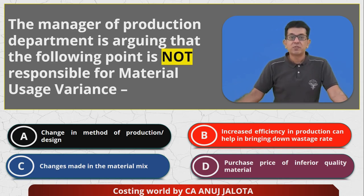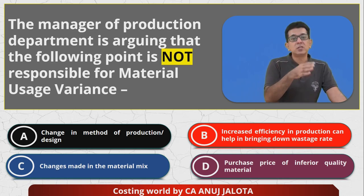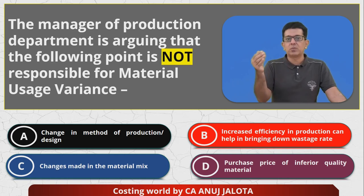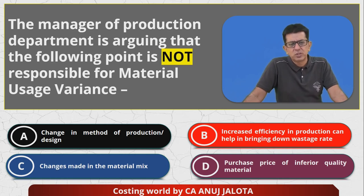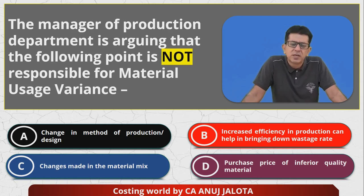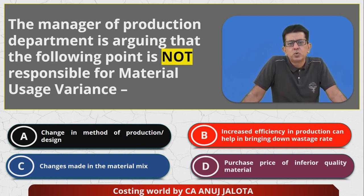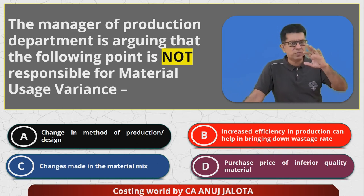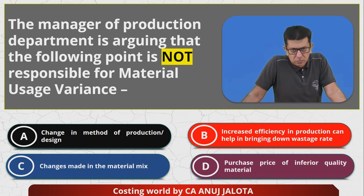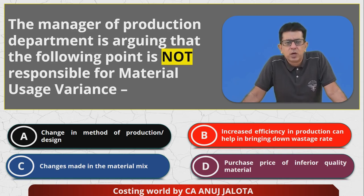We need to find what cannot be the reason for usage variance. If you change the method of production or product design, the quantity of material used will change — so A cannot be the answer to 'not responsible.' For option C — changes in the material mix — usage variance is divided into mix variance and yield variance. If mix variance changes, usage variance is automatically affected. So C also cannot be the answer.